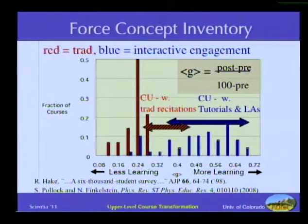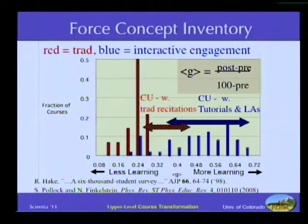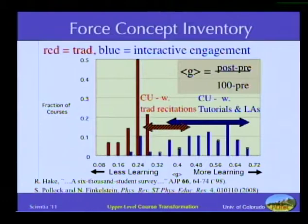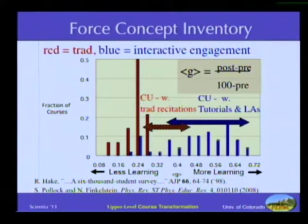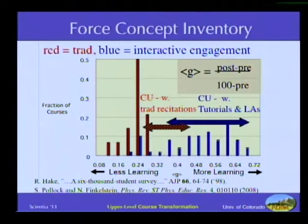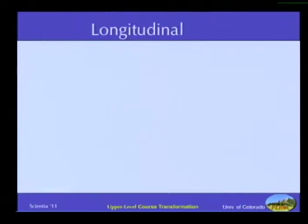When Colorado uses learning assistance and University of Washington's research-based tutorials in introductory physics, we're replicating what Richard Hake would have predicted. We've begun investigating what's the difference between the classes on the left side of that distribution and the classes on the right side. What is different about interactive engagement? We can talk about that in the breakout session if people are interested.